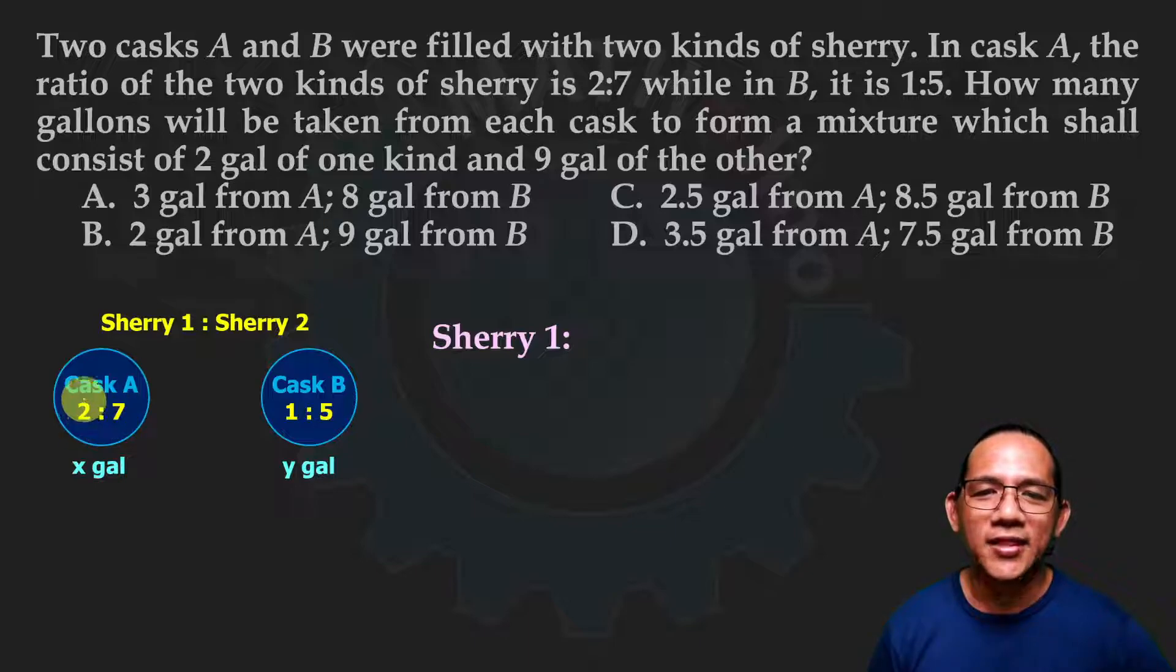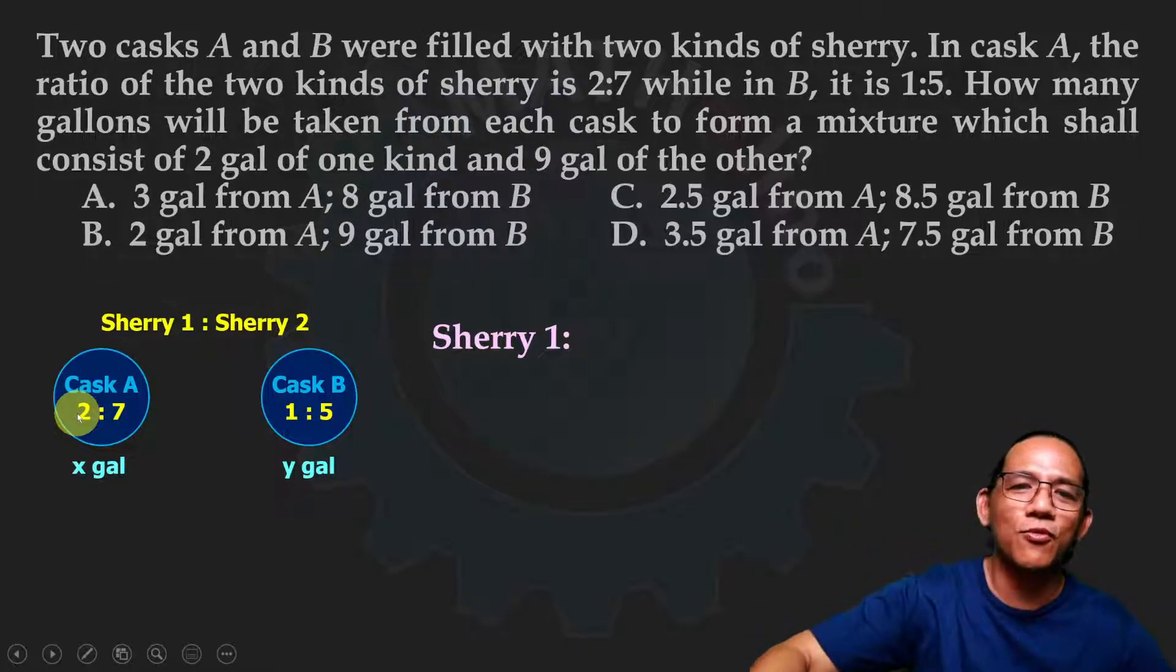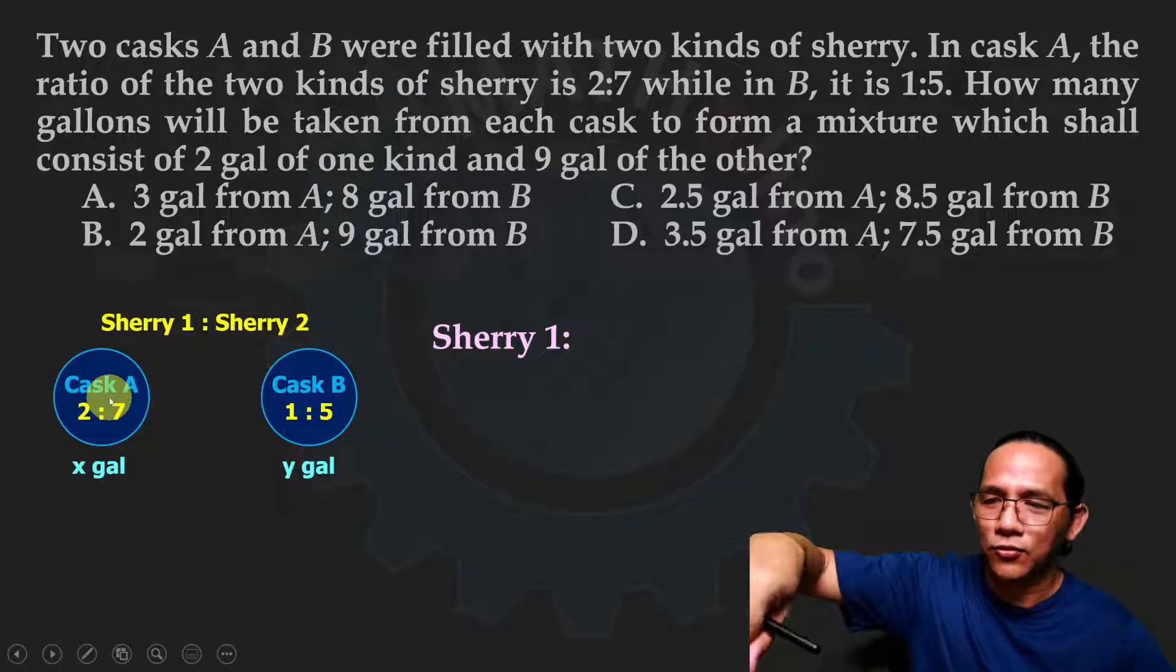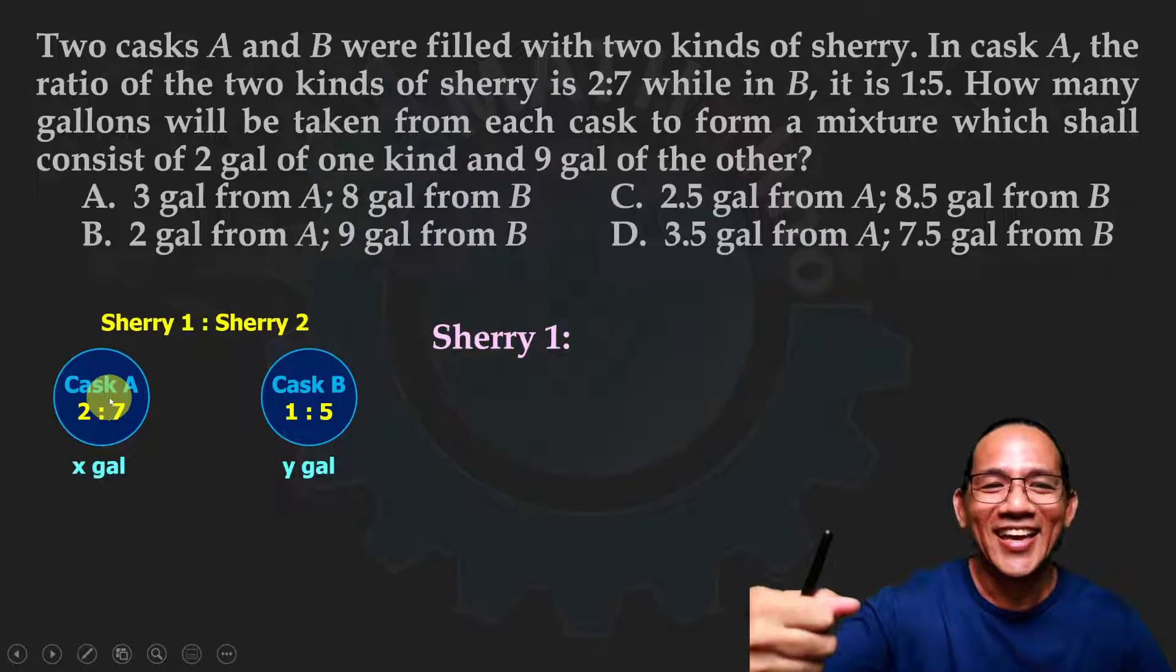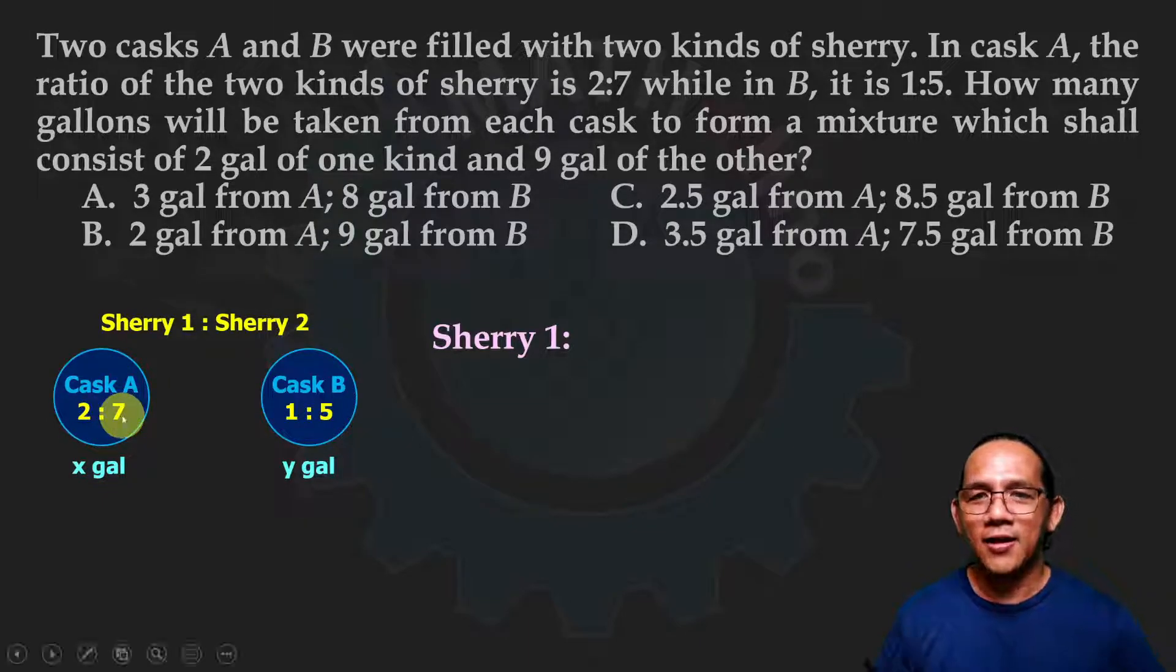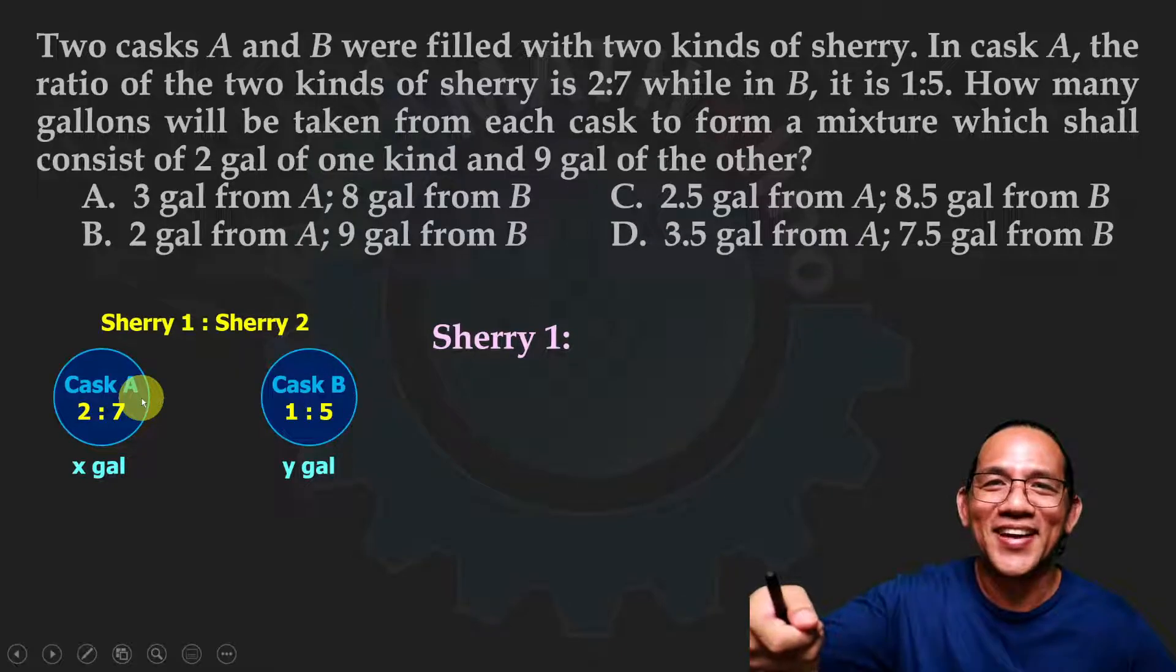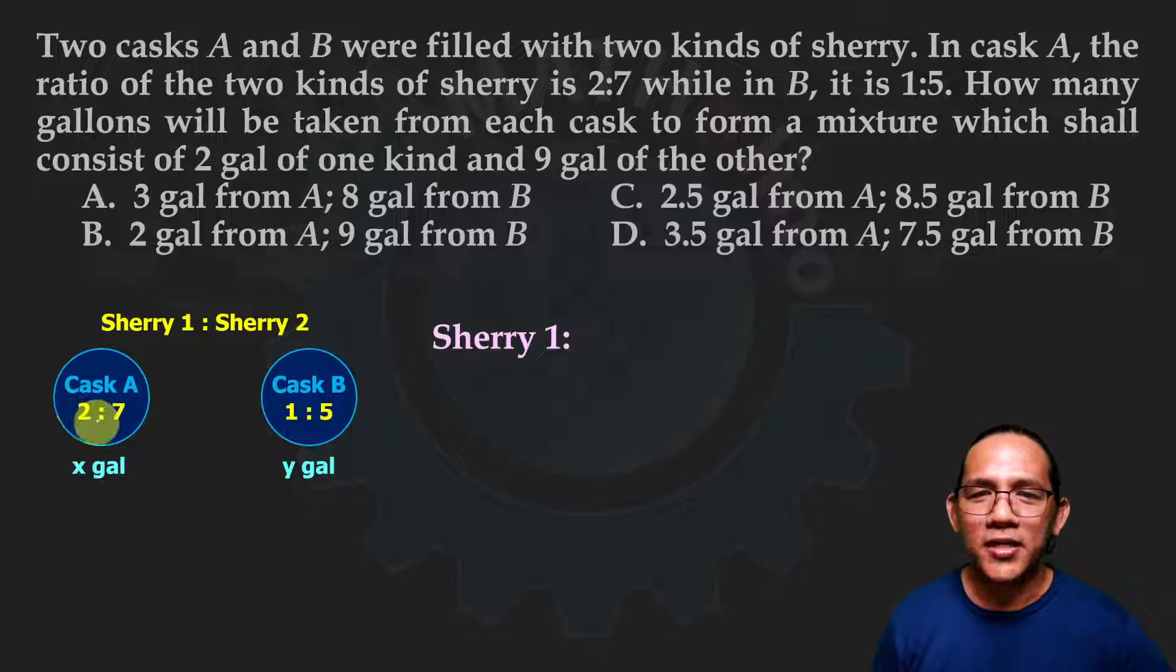A total of nine parts. The sherry number one here is two parts. This means when you take from cask A, the proportion of the sherries is always 2 to 7, even in the container. Two parts out of nine, that's the sherry number one that's there, times x gallons that you took.